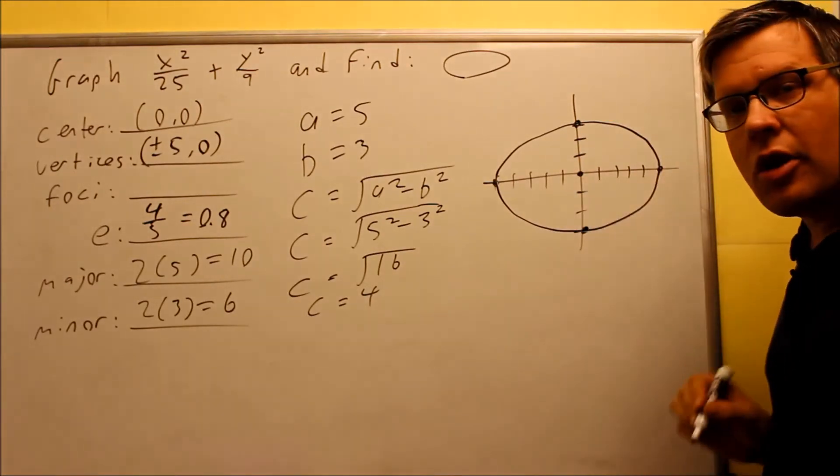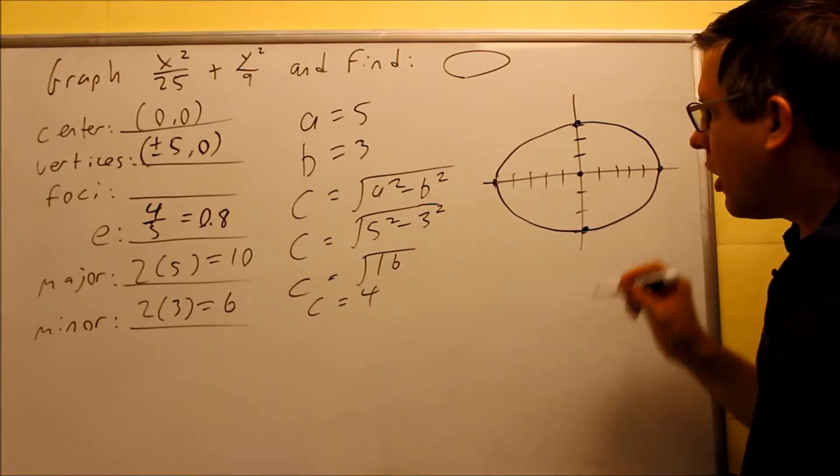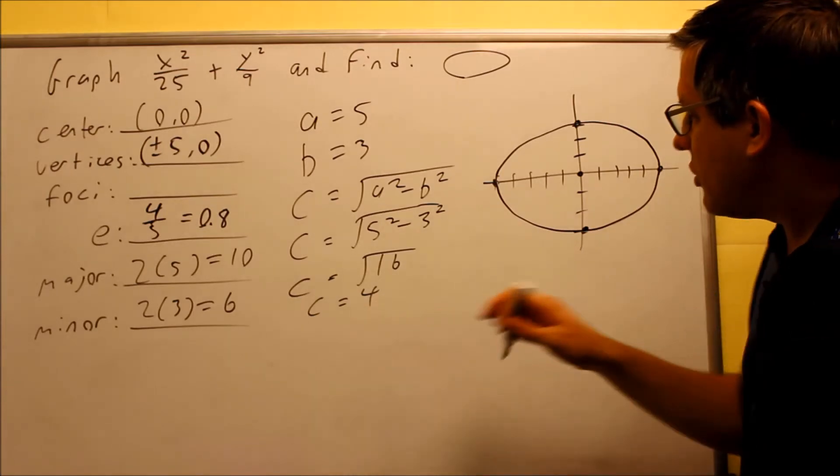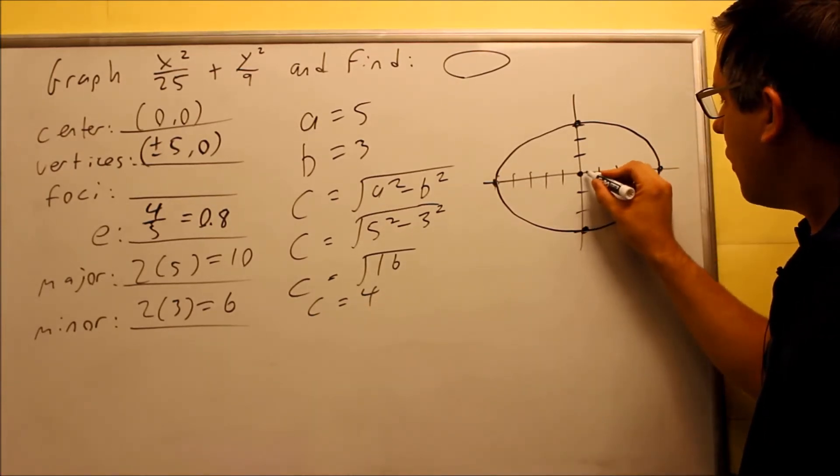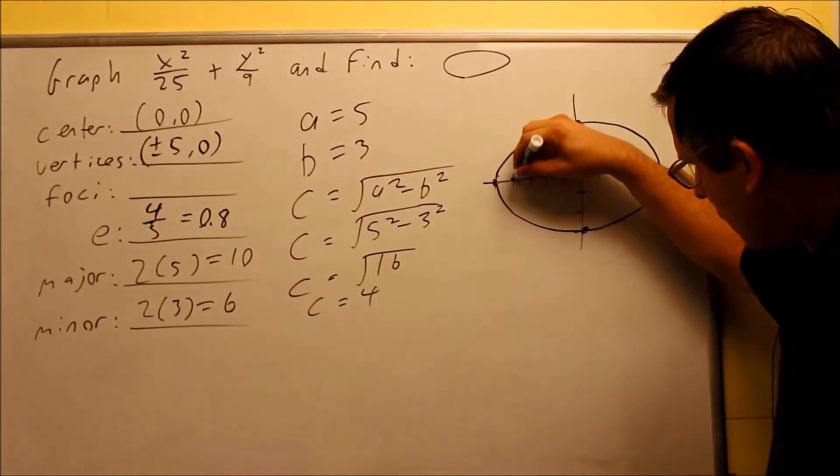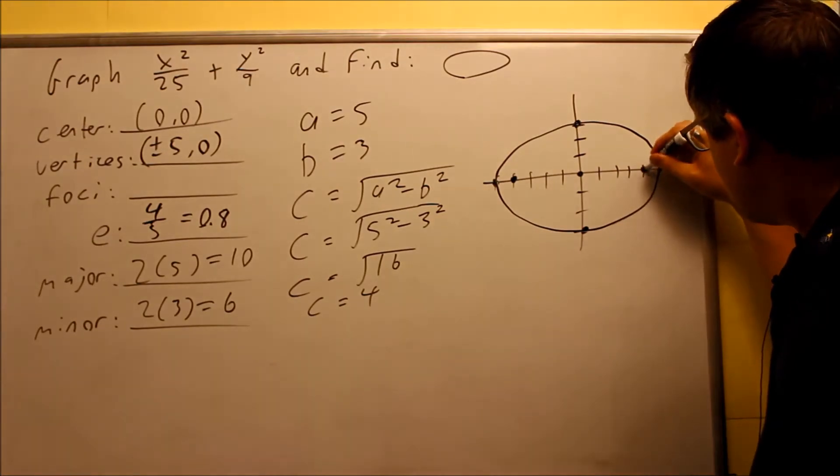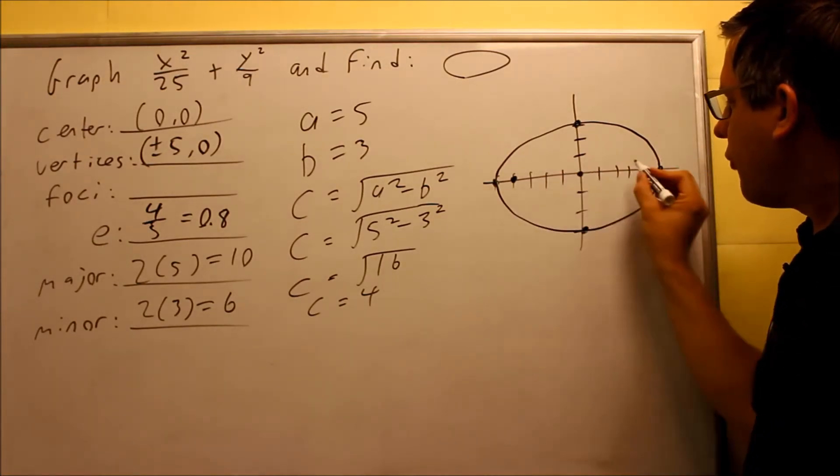So therefore, that's going to be our completed ellipse. Now we also have to put down our c value. The c is 4, so from this vertex, we go to the left 4 and to the right 4, and that's where our foci would be.